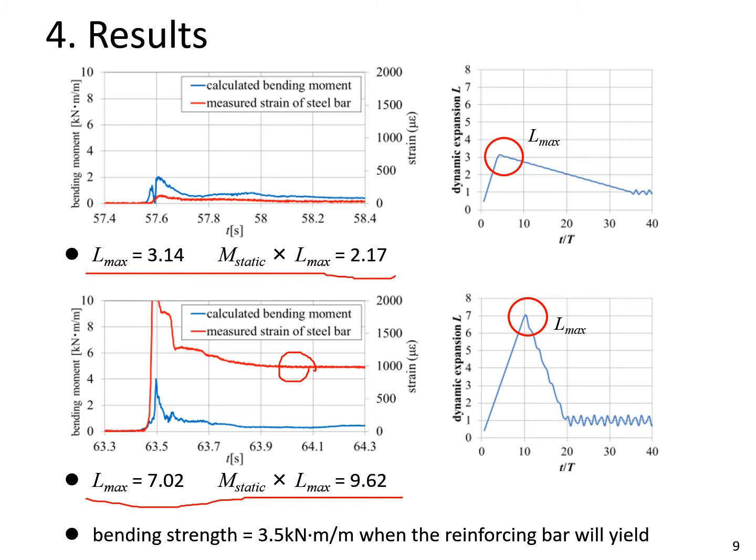Comparing M static times Lmax with bending strength 3.5 kNm per meter when the reinforcing bar will yield, the calculation result of the upper figure fits the reality that no residual strain occurs. The calculation result of the lower figure also fits the reality that the reinforcing bar yields.